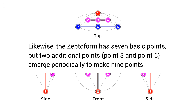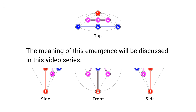Likewise, the zeptoform has seven basic points, but two additional points — point three and point six — emerge periodically to make nine points. The meaning of this emergence will be discussed in this video series.